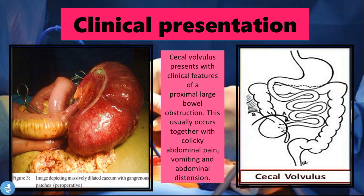The clinical presentation: a cecal volvulus presents with clinical features of a proximal large bowel obstruction — nothing is able to get into the large bowel. This usually occurs together with a colicky abdominal pain, because peristalsis is still occurring, as well as vomiting and abdominal distension. The small intestine is still trying to push content through the cecum, which is unable to pass food into the large bowel. When the cecum dilates and becomes fully distended, the small bowel will also dilate as it collects food and digested matter with nowhere to go.